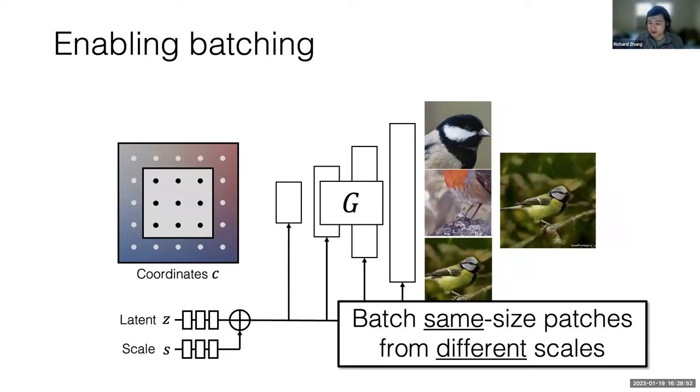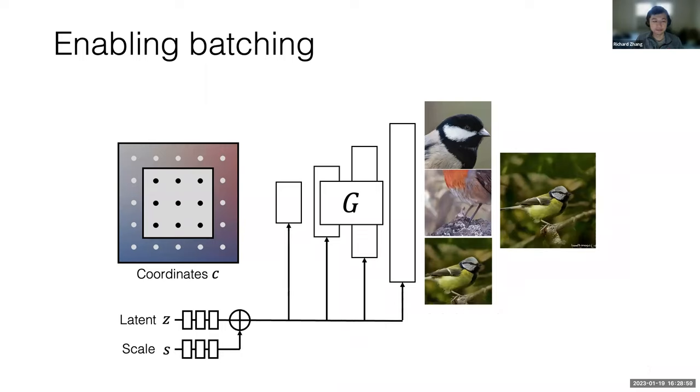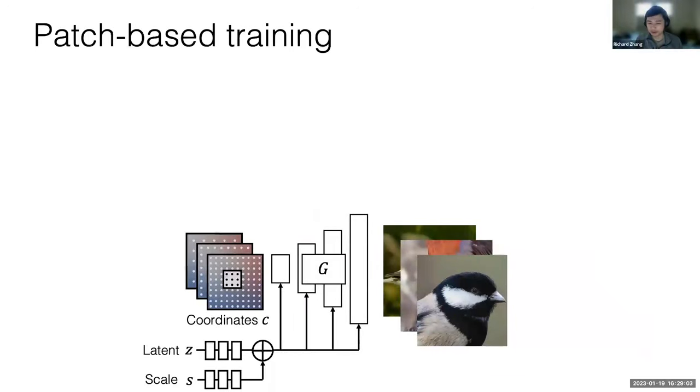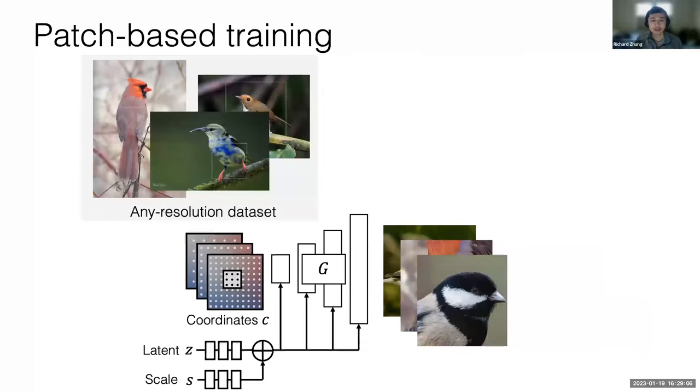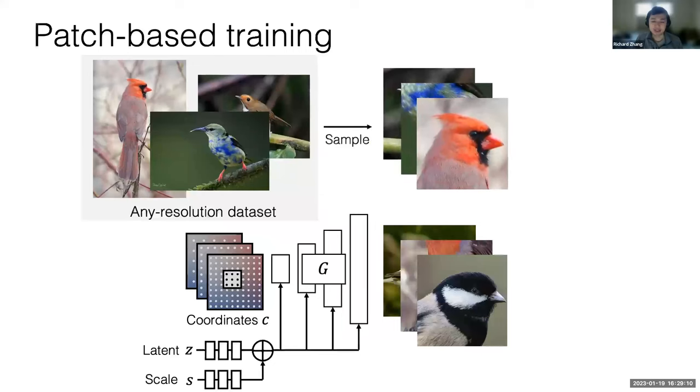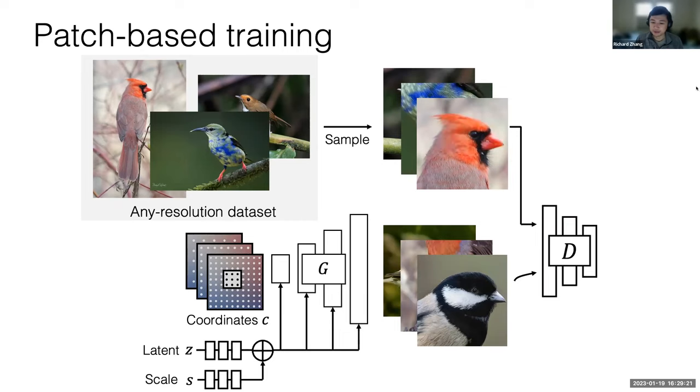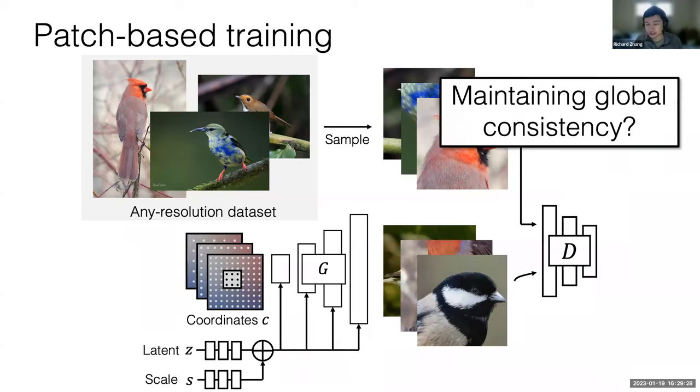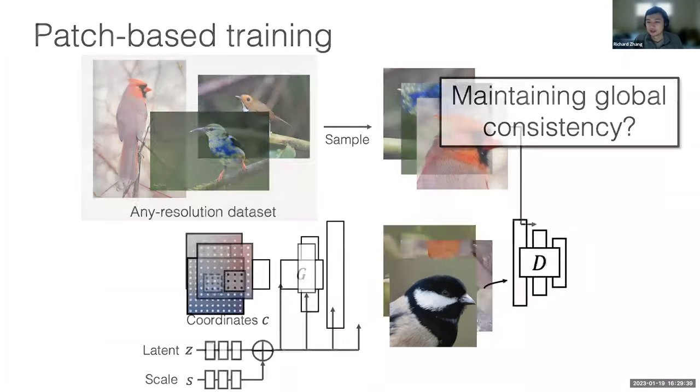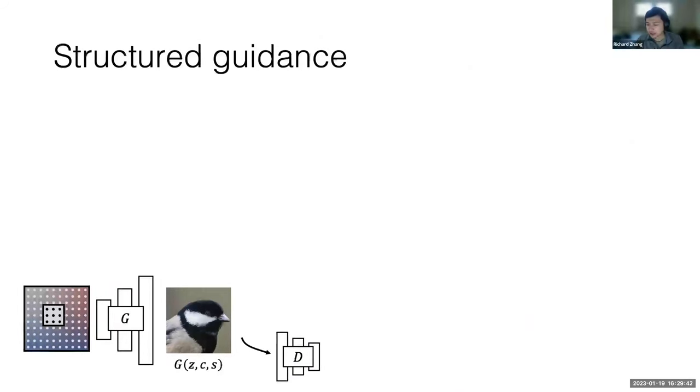This allows us to basically get nice patches, because we can batch same size patches, even from images that have different underlying scales. From here, we're almost home free. We query the generator for these different patches. We can take our dataset, also grab same size patches from different sized images that are in the dataset. Then we can put them through discriminator, which is how a GAN works. At this point, we have some system for sampling patches and making sure they look realistic. We also want to make sure that we have global consistency. We don't want the bird's feet at the top of the image and the bird's head at the bottom of the image. That just wouldn't make sense at all. So we also have a little bit of structured guidance here.